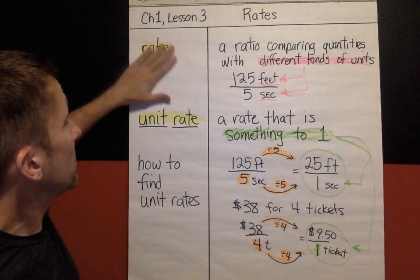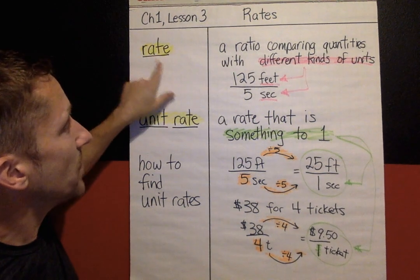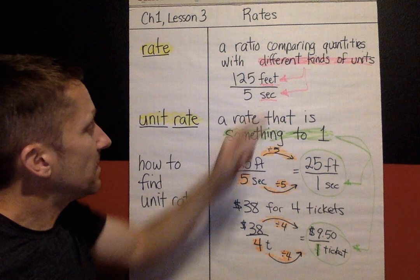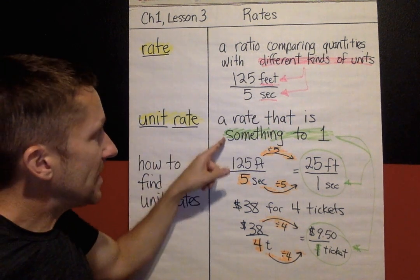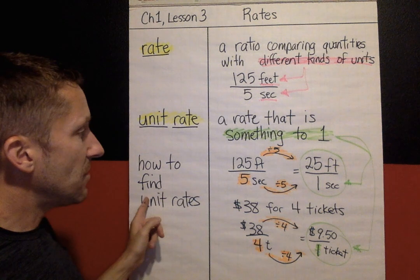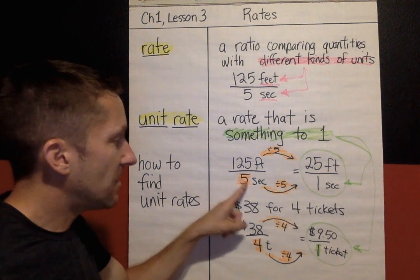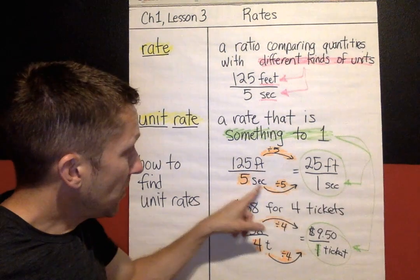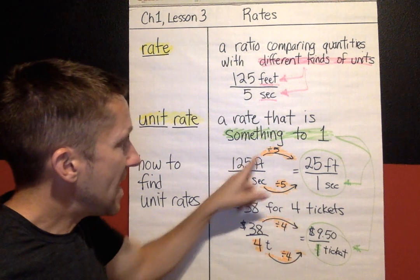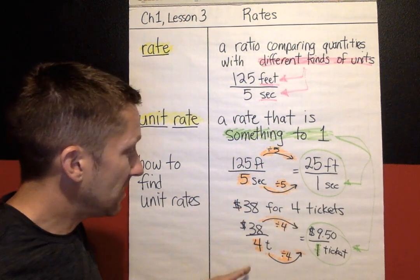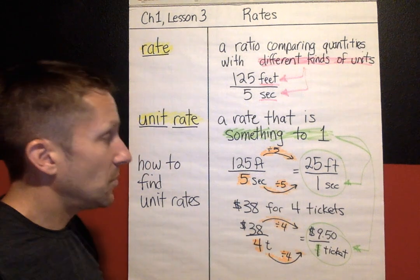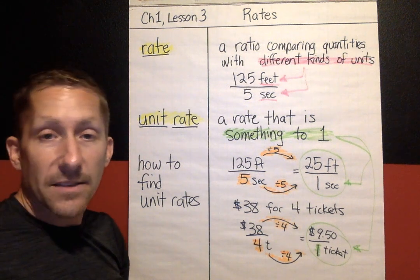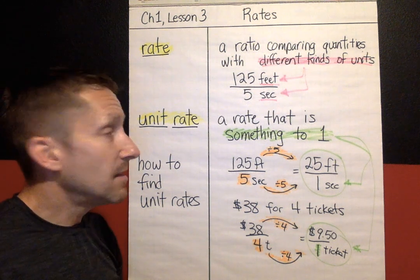So that's the recap for Lesson 3. A rate is a ratio with different kinds of units, like feet and seconds. A unit rate is a rate that is something to one. To find a unit rate, take a rate and divide both the top number and bottom number by the denominator — that changes a rate into a unit rate. That's Chapter 1, Lesson 3. You will find out your assignment in class. See you next time.